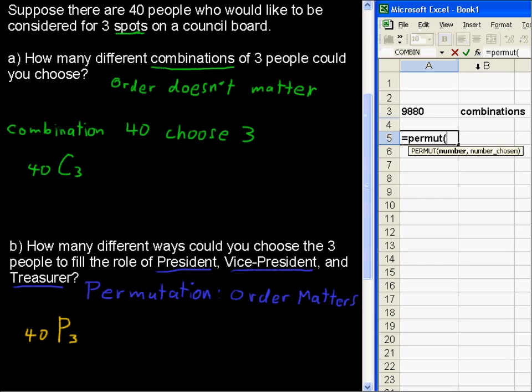Permut, equals permut, open parentheses, and the number that we want, that's forty people. And from that number, we are choosing three, close parentheses, and quite a bit more. Permutation will be a larger number than combinations.